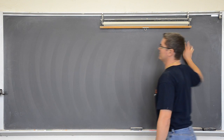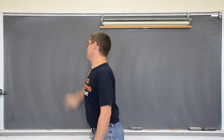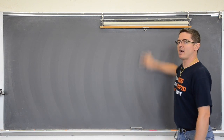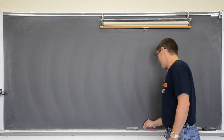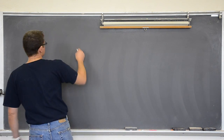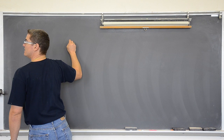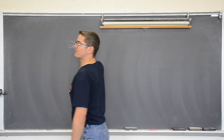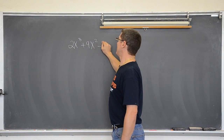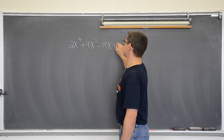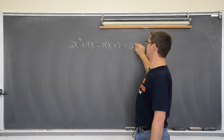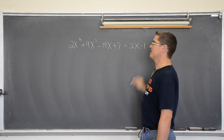Don't forget, polynomials are a collection of terms that are added or subtracted together, all of which have exponents of positive integers. We are going to take 2x³ + 9x² − 19x + 7 and divide that by 2x − 1.